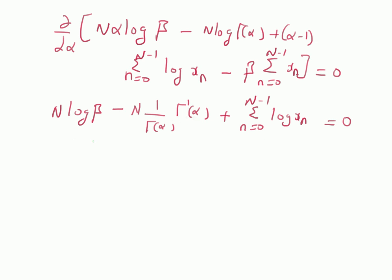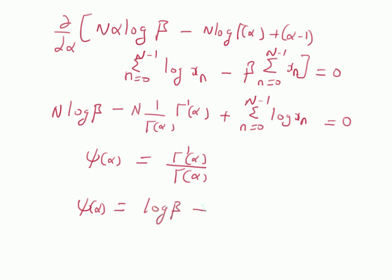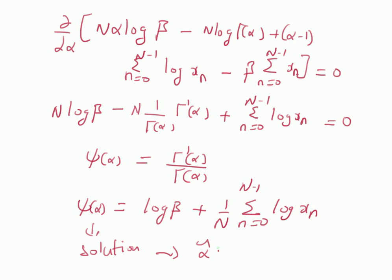In order to solve for alpha, we use psi(alpha) — which is the digamma function, defined as the derivative of the gamma function divided by the gamma function, i.e., Gamma'(alpha)/Gamma(alpha). By using this definition in the equation, we get: psi(alpha) = log(beta) + (1/N) * sum_{n=0}^{N-1} log(x_n). Solving this non-linear equation using any numerical method gives alpha-hat, the estimate of alpha.